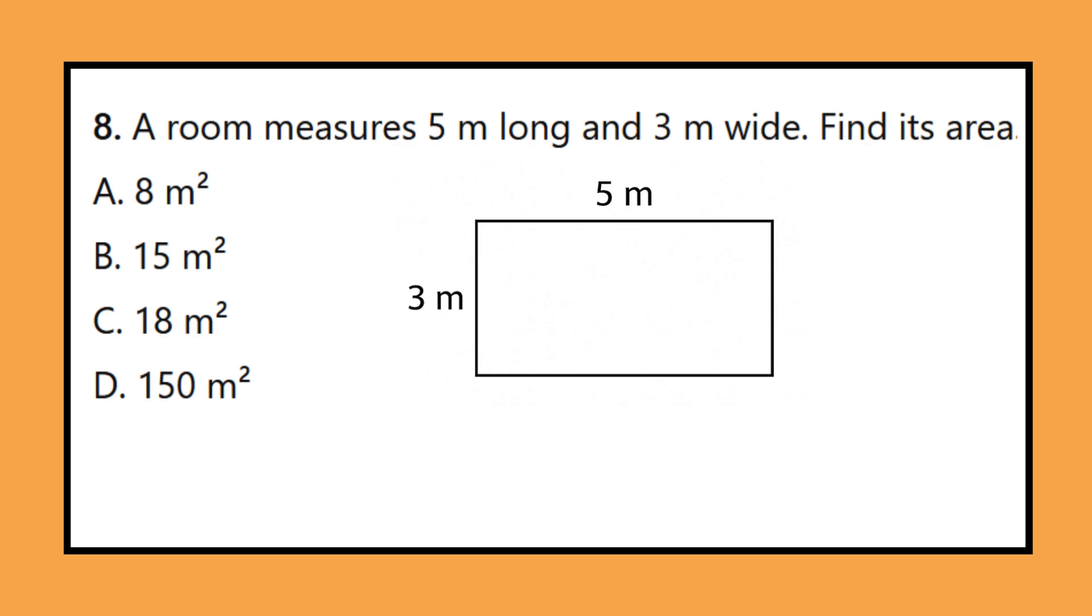Question 8: A room measures 5 meters long and 3 meters wide. Find its area. A. 8 square meters, B. 15 square meters, C. 18 square meters, D. 150 square meters.